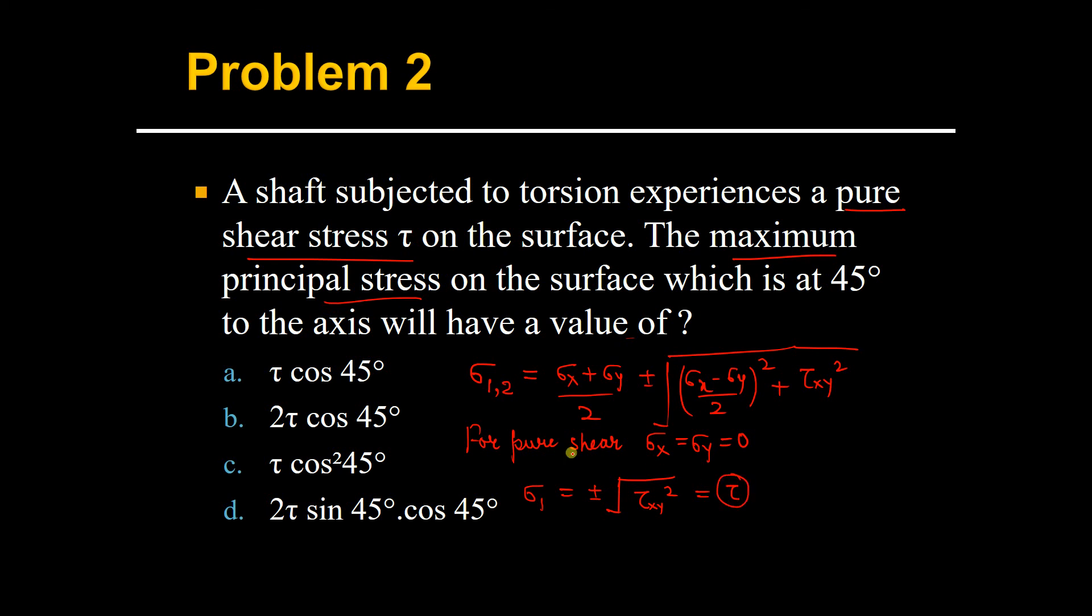Let's check. Cos 45 is 1 by root 2, so of course this is not the answer. This is also not the answer because this will not give you tau. This will also not give you tau. But yes, sine 45 is 1 by root 2, cos 45 is 1 by root 2. 1 by root 2 into 1 by root 2 is half, so the 2s get cancelled out and this will be left with tau. Hence option D is correct.